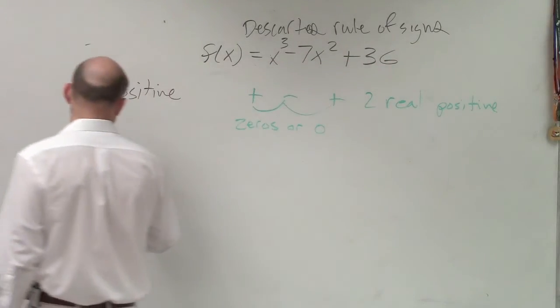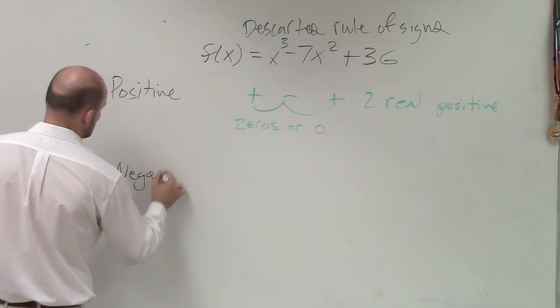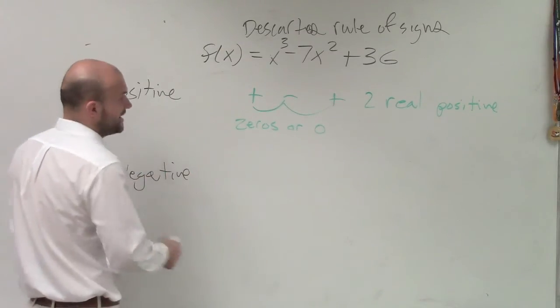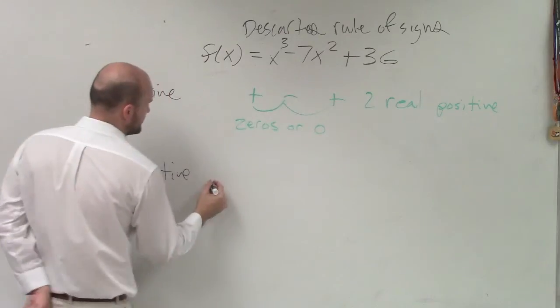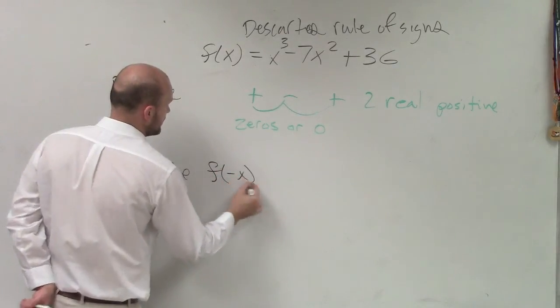Then we go and look at the negative. Now the negative are a little bit more fun. Because negative, here we just did f of x. For the negative, we do f of negative x.